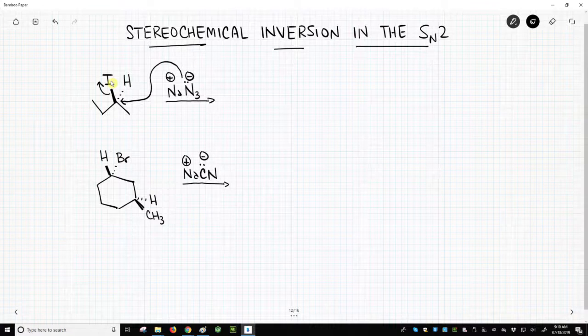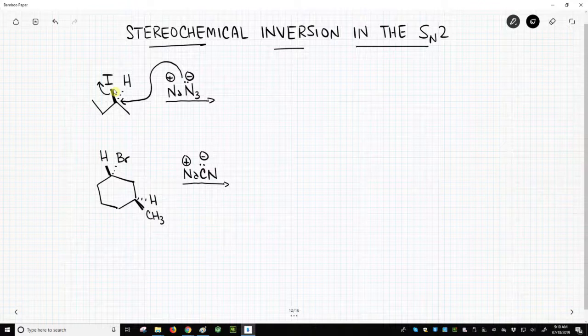So azide is our nucleophile. It attacks this carbon, and we break that carbon iodine bond at the same time.